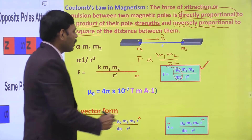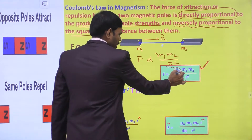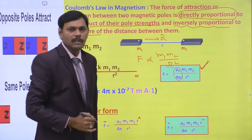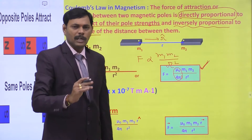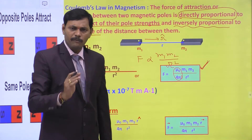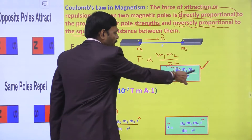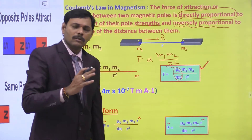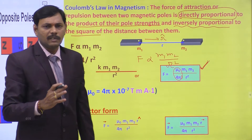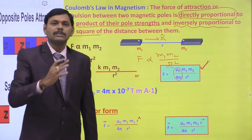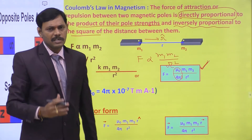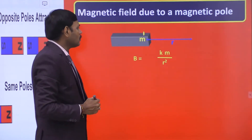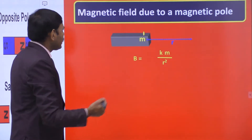In magnitude form, the required expression for Coulomb's Law of Magnetism is F = (μ₀/4π) · M1·M2 / R². We have completed the first content of today's discussion: Coulomb's Law of Magnetism.